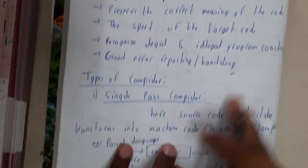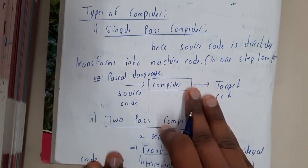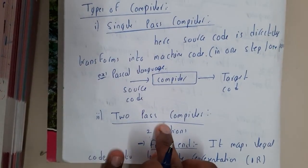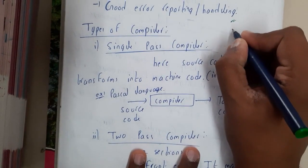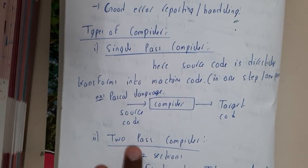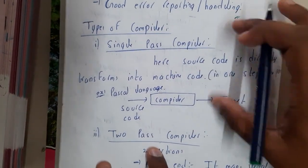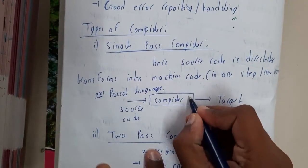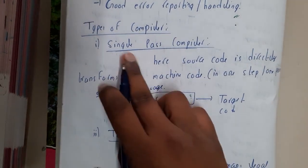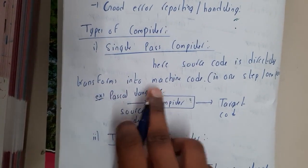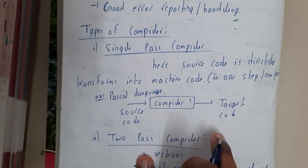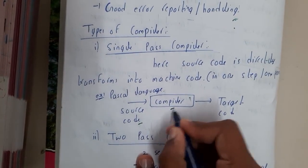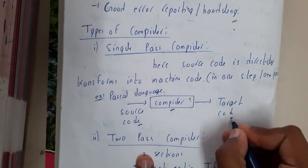Now let us go through the types of compilers. There are three different types: single pass, two pass, and multiple pass. We will be having some phases of a compiler which we'll discuss in future lectures. For now, assume those phases are all inside a single compiler with multiple layers. In a single pass compiler, source code is directly translated into machine code in a single step. Source code is given as input and the compiler outputs the target code or machine code.